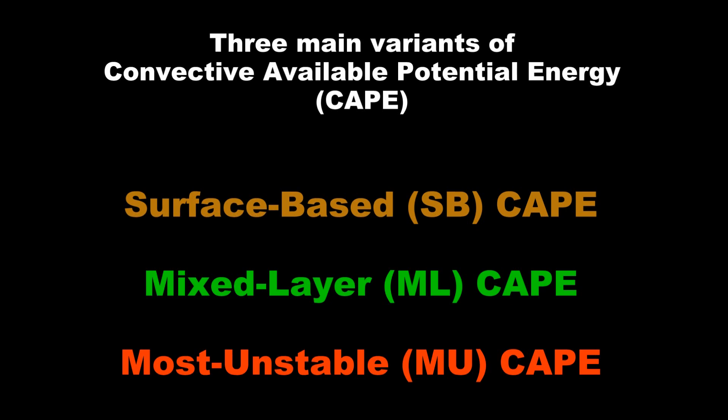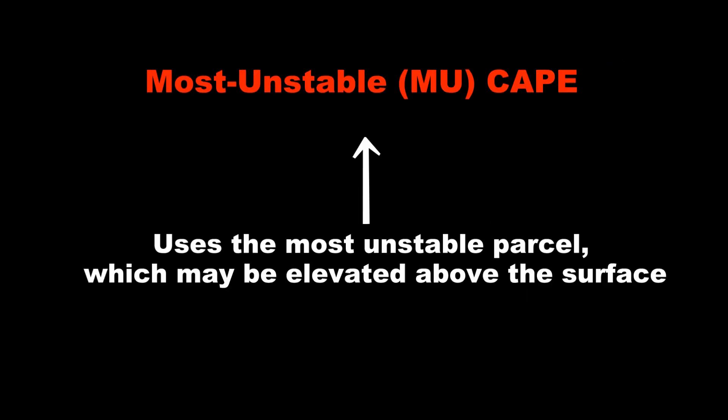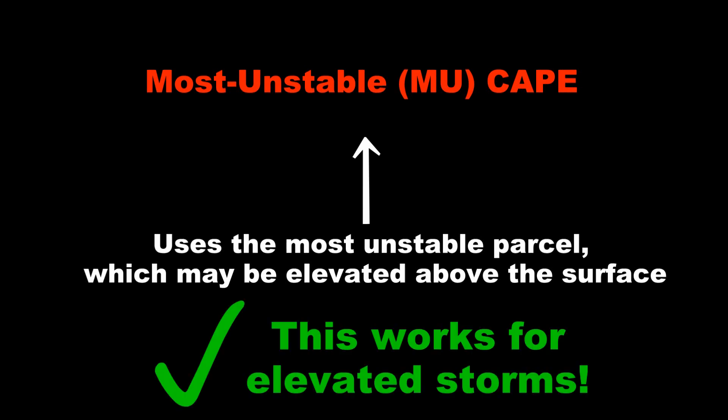Of the three main variants of convective available potential energy, both surface-based CAPE and mixed-layer CAPE use surface parcels to calculate buoyancy. But the third variant, most unstable CAPE, uses the most unstable parcel within the lowest 300 millibars of the atmosphere, which may be located above the boundary layer.